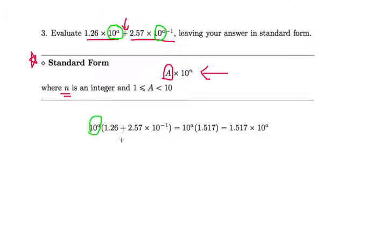When you take it out, you're left with 1.26, and then you're left with 2.57, and then you're left with minus 1 here as well. This is what you get - you find this, so you get 1.57 from here to here.